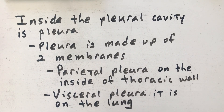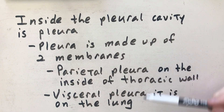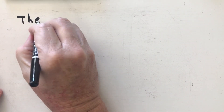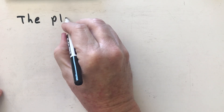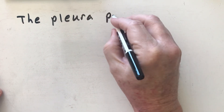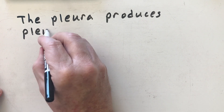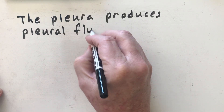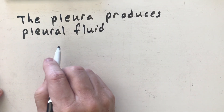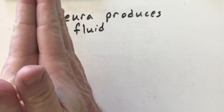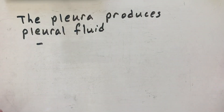Now the thing about these two membranes — the parietal pleura and the visceral pleura — is that they both produce a fluid called pleural fluid. The function of the pleural fluid is it reduces friction between the lung and the thoracic wall as the lung opens and closes.